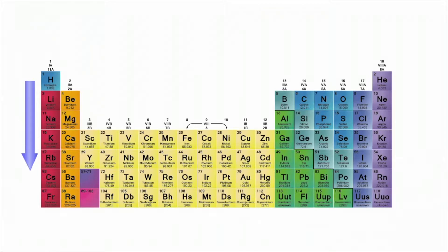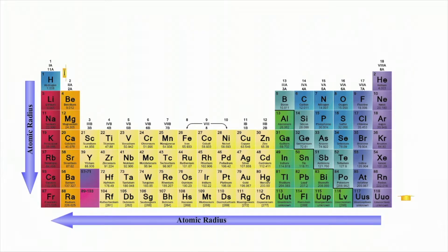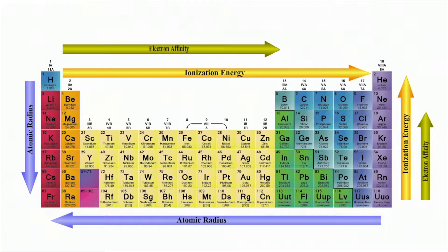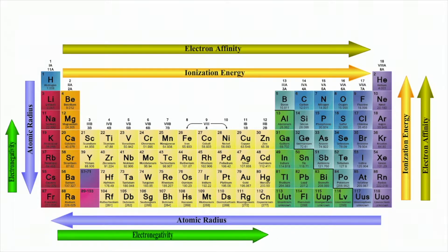Moving from top to bottom, atomic radius increases, ionization energy decreases, electron affinity generally increases, and electronegativity decreases.